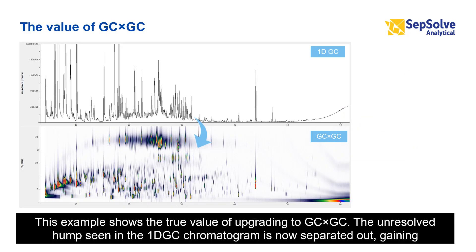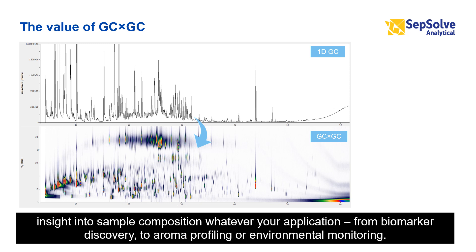This example shows the true value of upgrading to GC×GC. The unresolved hump seen in the 1D GC chromatogram is now separated out, gaining insight into sample composition — whatever your application, from biomarker discovery to aroma profiling or environmental monitoring.